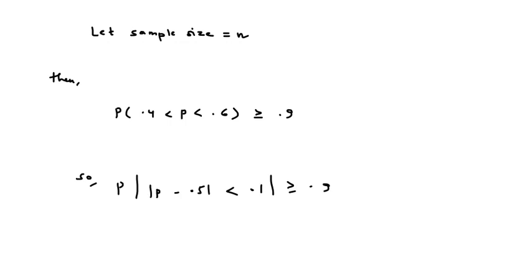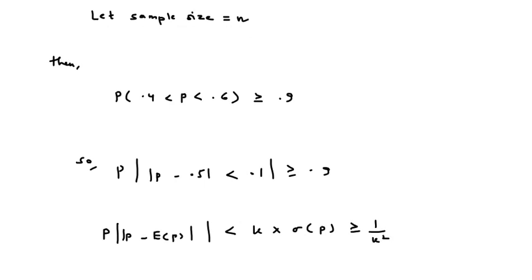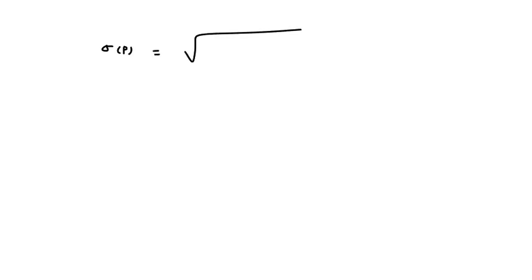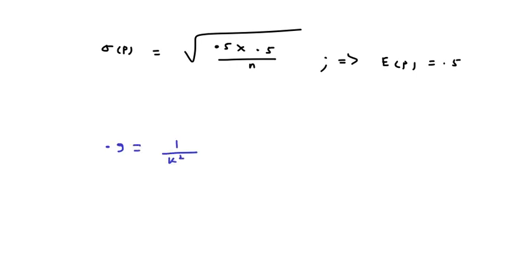Now comparing it with the standard Chebyshev equation: p(|p̂ − μ| < k·σ_p) ≥ 1 − 1/k², where σ_p = √(0.5 × 0.5 / n). Also, E[p̂] = 0.5, so on comparison I can write 0.9 = 1 − 1/k².